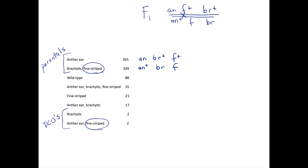When we draw in the crossovers on the F1 genotype, we can see how a double crossover during meiosis gives rise to the least frequent allelic combinations: AN+, F+, BR, and AN, F, BR+, which match our DCOs.